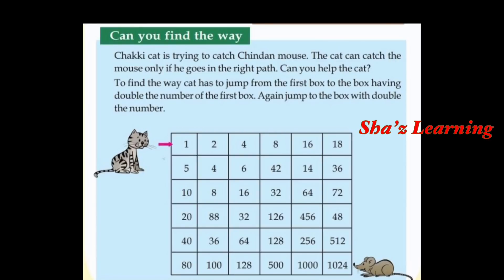That means cat holds onto the right path. 1 in the right path has to be 1. 1 plus 1 is 2. 2 are dealing with double. Then 2 is in the right path, 2 plus 2 is 4. 4 are dealing with double. 4 plus 4, that is 8.